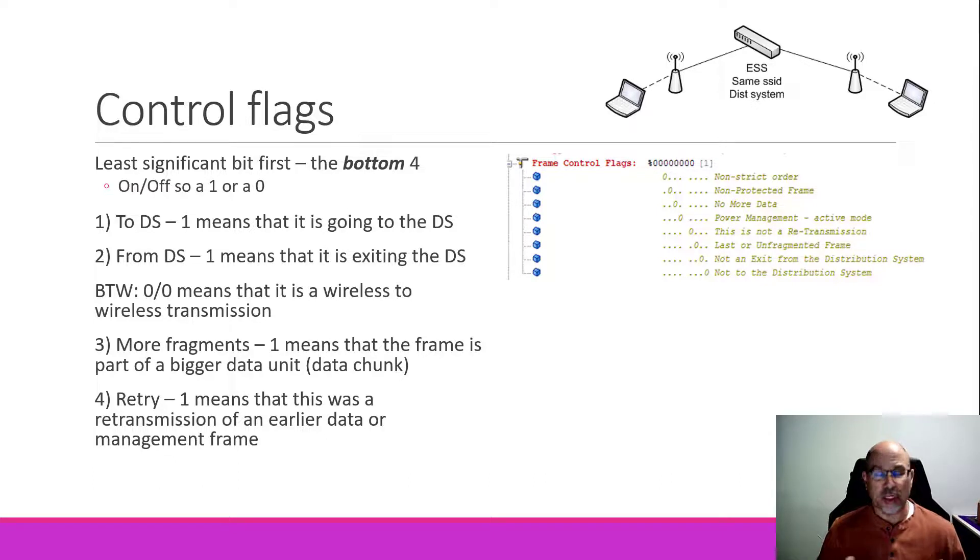The more fragments flag is pretty straightforward. In the wireless world, we talk about MSDUs that are coming down, or the data units that are coming down from the upper layers. Anytime we have to break up the data, we're going to provide an indication that a data chunk is part of a larger data chunk. So the more fragments flag just indicates that this is part of a larger set of data that is part of what we call the data unit.